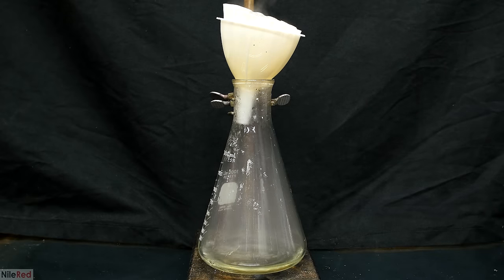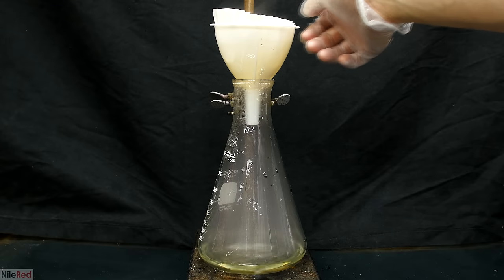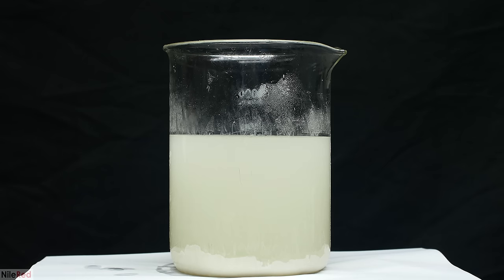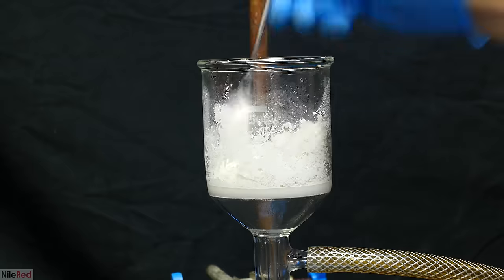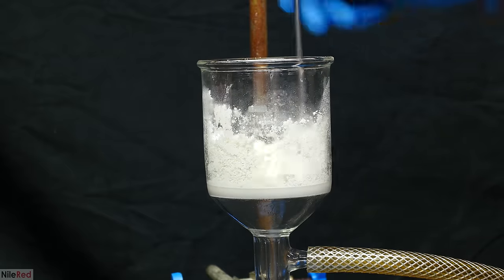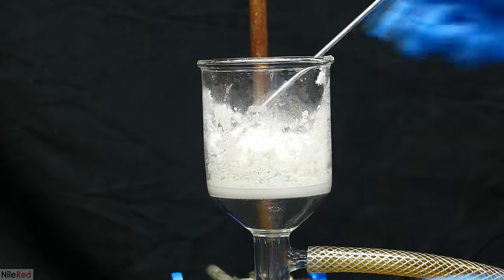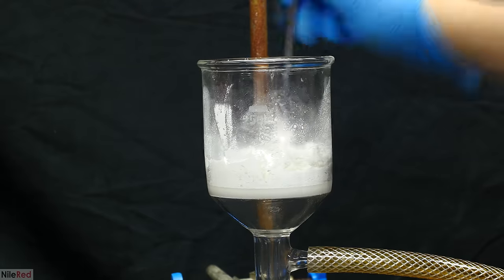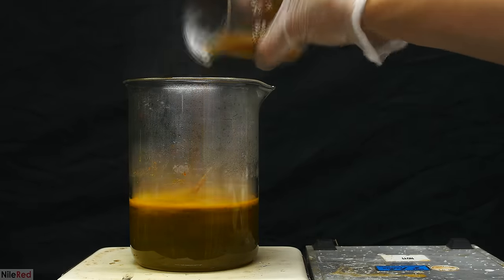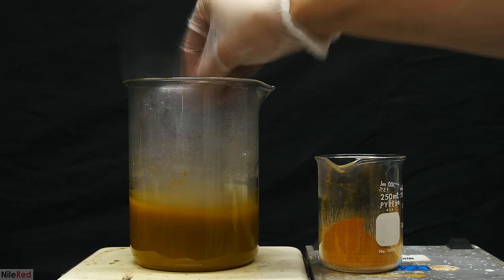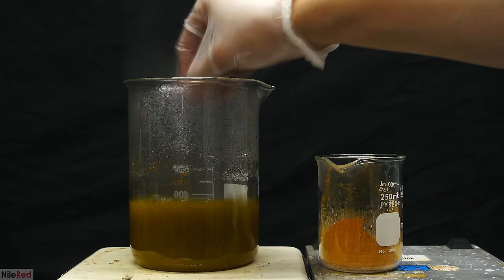Ammonium metavanadate is also used in a demonstration called the redox rainbow, and I'll post a video on that eventually as well. I might also make some mandolin reagent, which is pretty commonly used in drug testing kits. In general, vanadium is not the most common element to hear about, so I was a little bit excited to make a video on one of its compounds. I bought about 10 grams of vanadium metal a few months ago and I'll eventually do an element video on it.